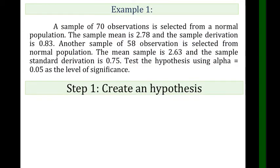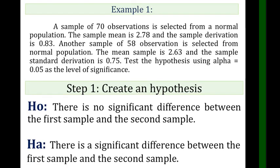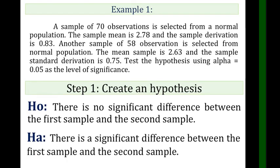First, write the null hypothesis and the alternative hypothesis. For the null hypothesis: there is no significant difference between the first sample and the second sample, or between the 70 observations and the 58 observations. For the HA: there is a significant difference between the 70 observations and 58 observations.